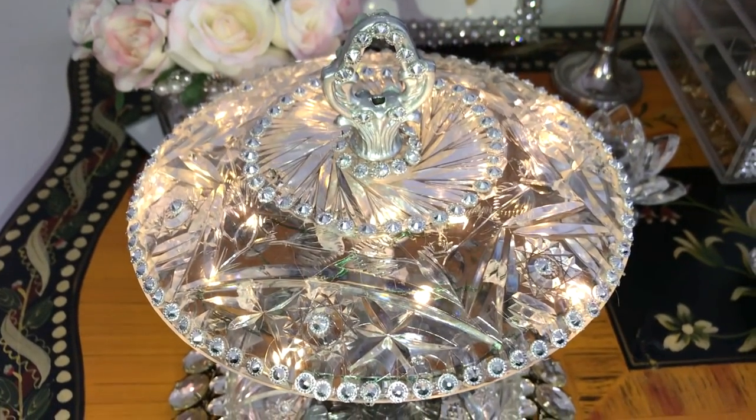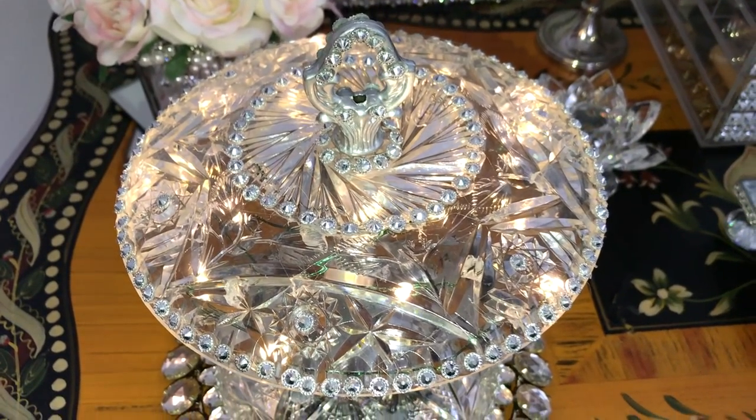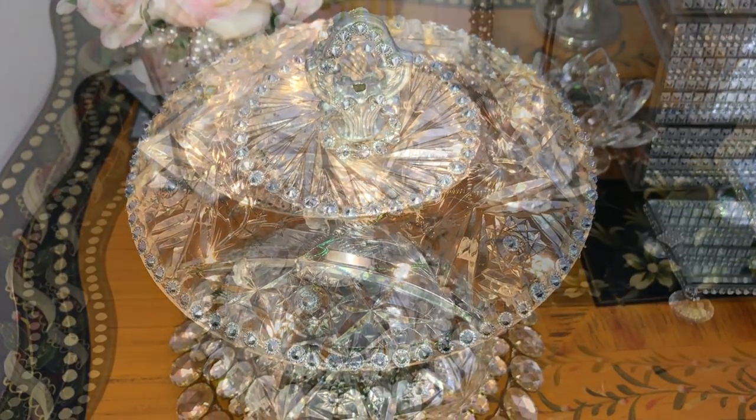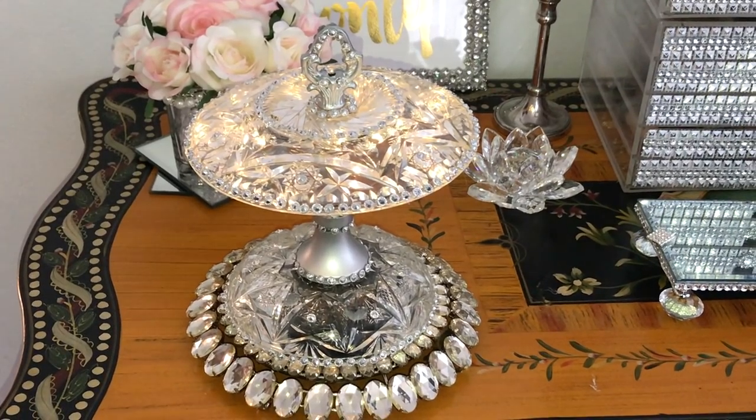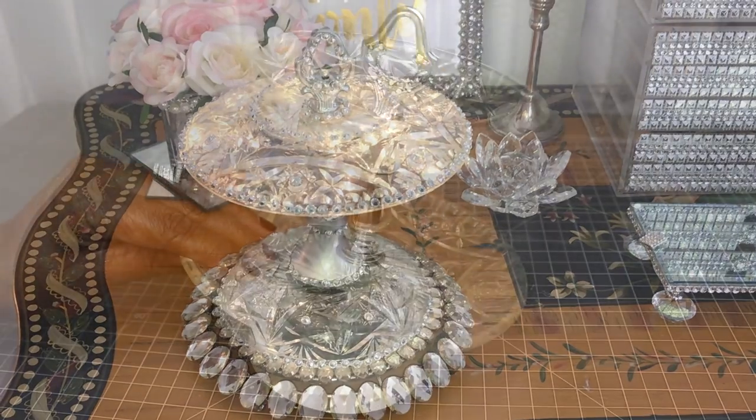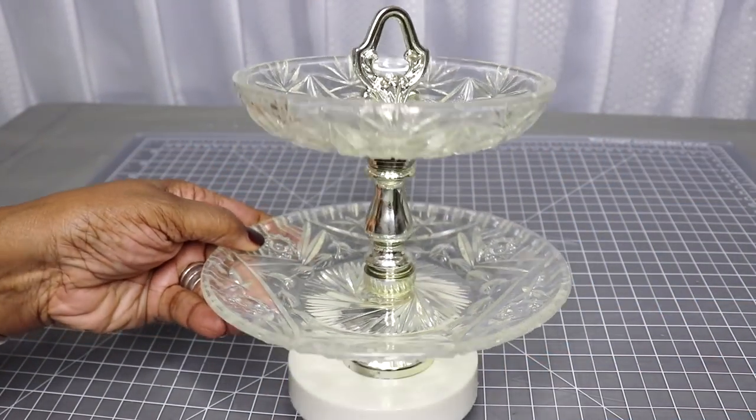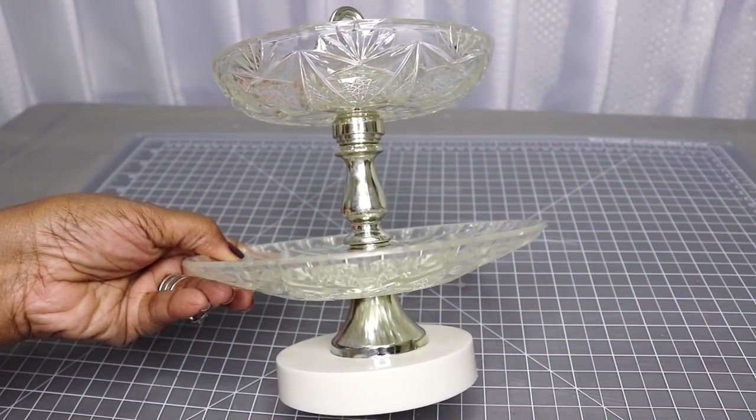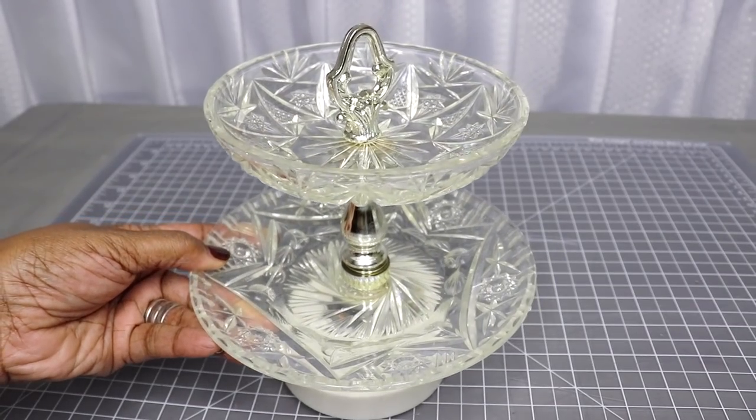This came out absolutely lovely and I made it with a candy dish, a two-tiered candy dish that I got from my mom a couple of years ago. Never used it, so I thought I would take it apart and make something interesting with it. This is a beautiful lamp and came out absolutely lovely. So if you are interested in how I did this, just keep watching.